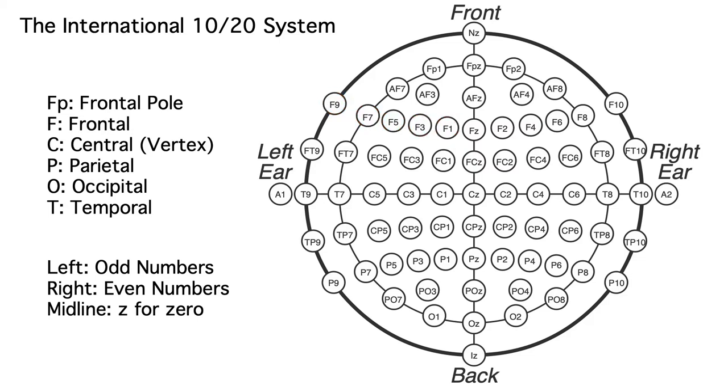Now that you know the general system, you don't need to memorize every individual electrode name. If I ask you where electrode FC2 is located, you should be able to figure out that it's near the border of the frontal and central areas, in the right hemisphere, and close to the midline.